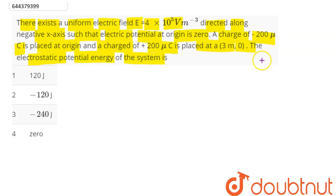So here it is given that electric field is directed along negative x-axis. We can say electric field is along minus x-axis of magnitude 4 into 10 power 5. Now, there are two charges - minus 200 microcoulomb at origin and a charge of plus 200 microcoulomb at (3,0), and potential at origin is given to be 0.